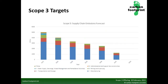Your supply chain footprint can then be added to your overall carbon footprint. Once this has been done, we can forecast your emissions forward. We do this by forecasting the emissions factors and using knowledge of what's going on in the markets to estimate what reductions will take place.